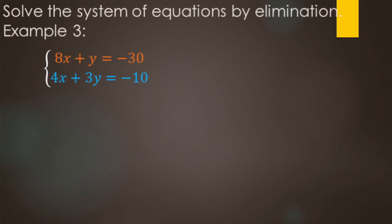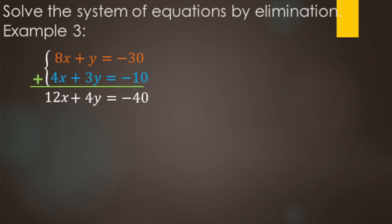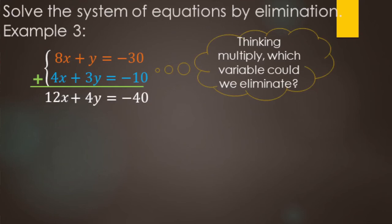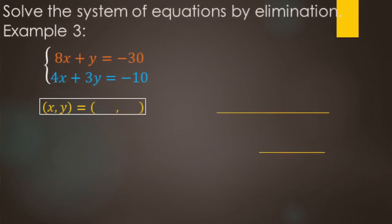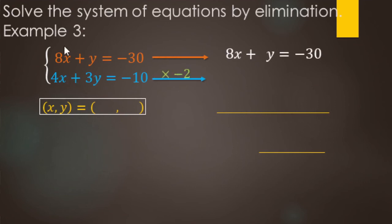We're going to use elimination to solve this system. Adding the equations together: 8x plus 4x makes 12x, y plus 3y makes 4y, negative 30 plus negative 10 makes negative 40 — but no variable was eliminated. To eliminate x's, we could multiply by negative 2. To eliminate y's, we could multiply by 3 or negative 3. Multiplying by 2 is easier, so we leave the top equation alone and multiply the bottom equation by negative 2.